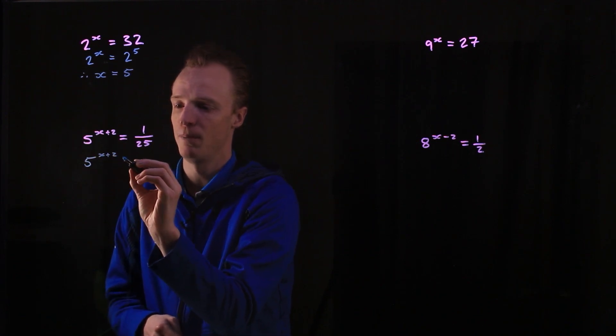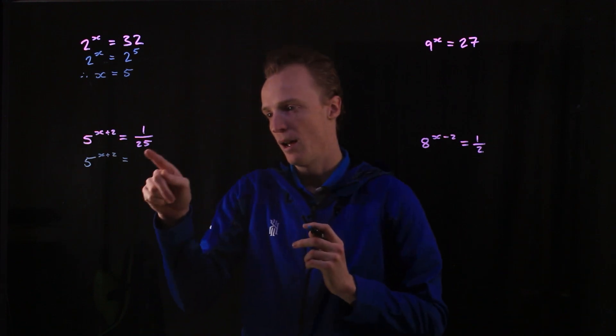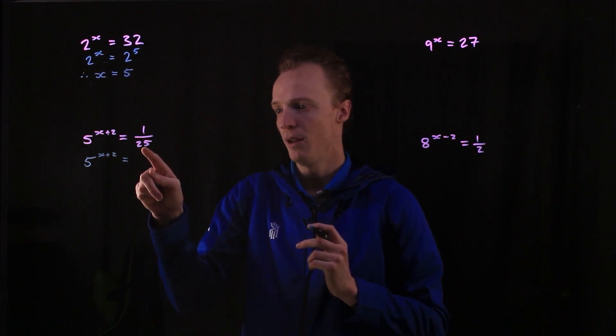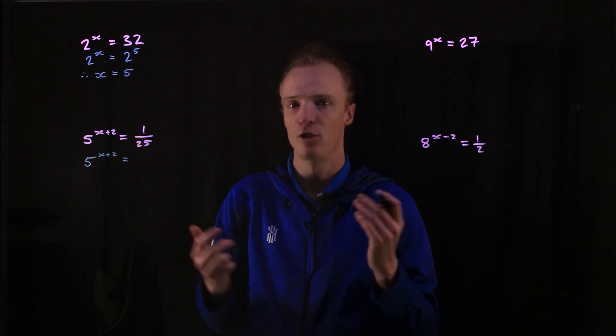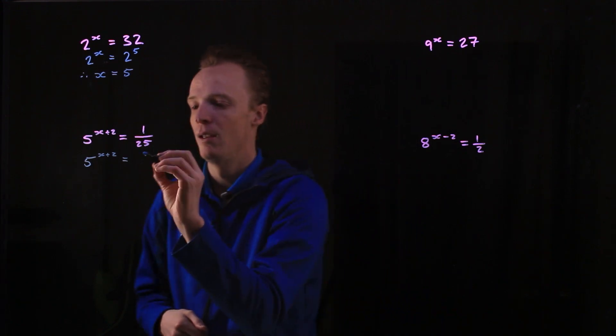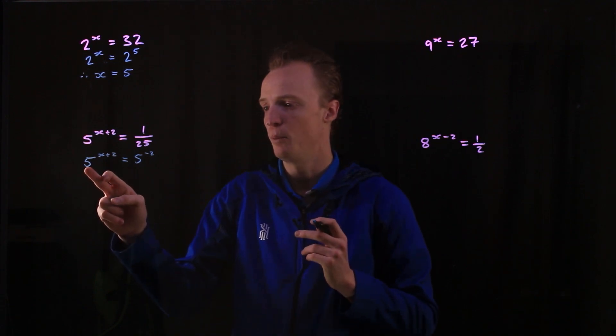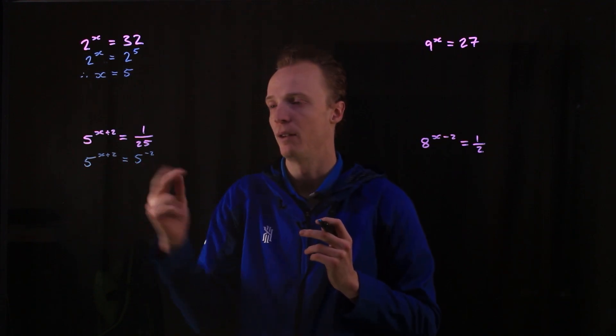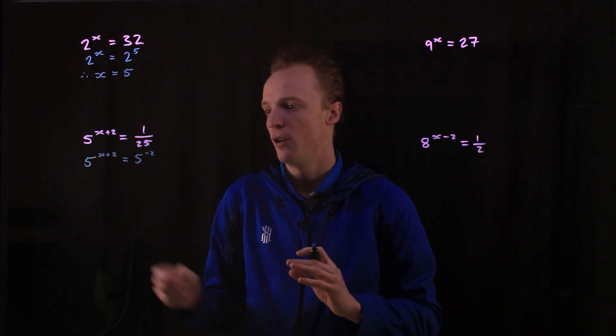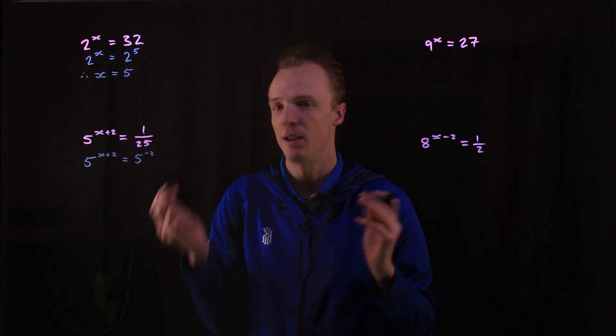So it will be 5 to the x plus 2 is equal to, now 25 is 5 squared. Now because it's on the bottom of the fraction, I'm going to make it a negative index. So this is 5 to the negative 2. Now because I've rewritten this with both the same base, the base of 5, I now know that the exponents must be equal to each other.